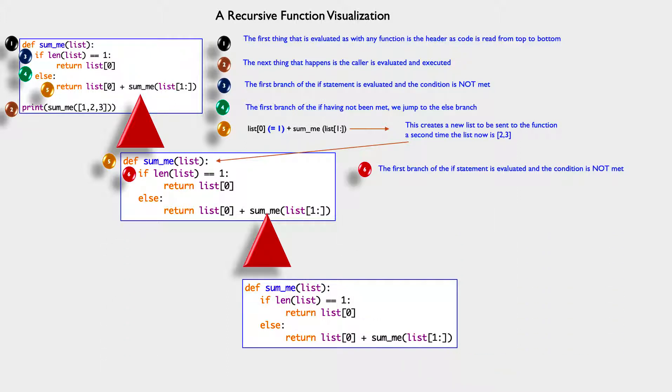What happens now? The first branch of the if statement is evaluated and the condition is not met. The first branch having not been met, we jump to the else. Now we go to the return. List[0] is now two, the first element of the list. Remember it was two and three the second time. So now that first element is two.